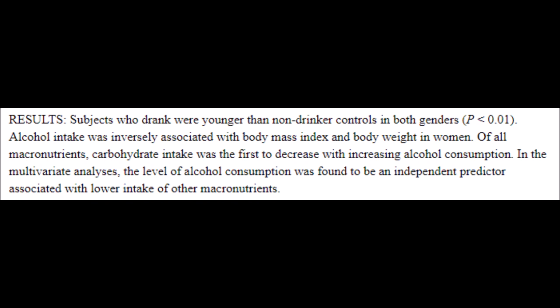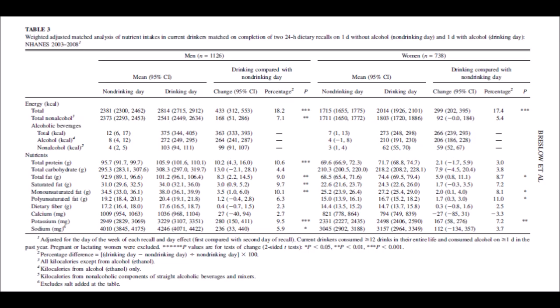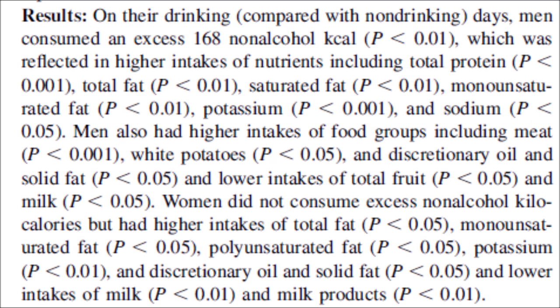The NHANES data also found that carbohydrate intake was the first to decrease with increasing alcohol consumption — as people drink more, they eat less carbohydrate. Another NHANES study looking at binge drinkers on drinking days found that people ate more on those days, but only more protein and fat — not more carbohydrate. There was a 10 percent increase in protein intake on drinking days. This makes sense if you look at snacks in a bottle store: beer sticks, peanuts, chocolate — much less in the way of biscuits and crackers. Tally up the macros and you've basically got a low-carb macro ratio.